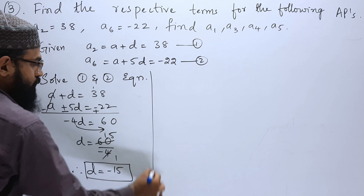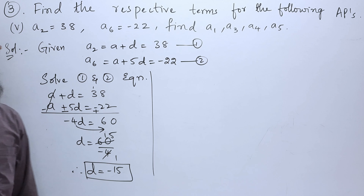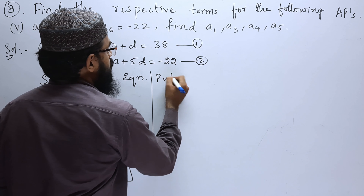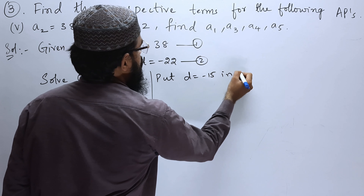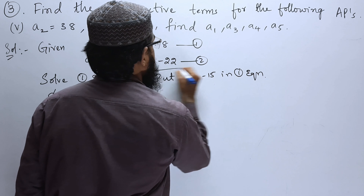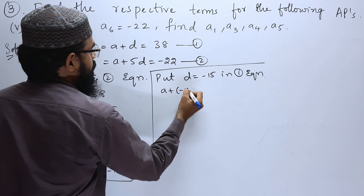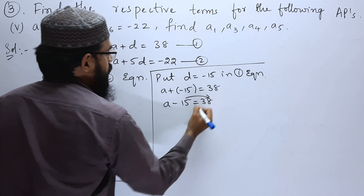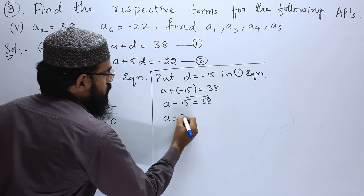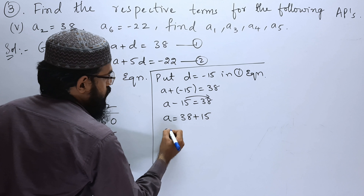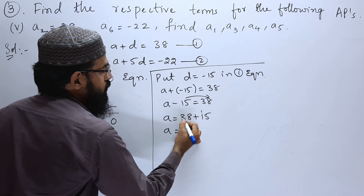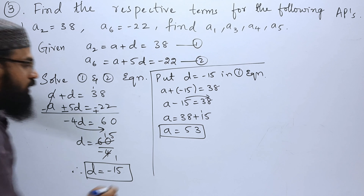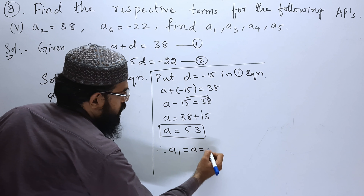D equals minus 15. Next, to find A, substitute D equals minus 15 in the first equation: A plus minus 15 equals 38, so A minus 15 equals 38. Moving minus 15 gives A equals 38 plus 15 equals 53. Therefore A1 equals A equals 53.